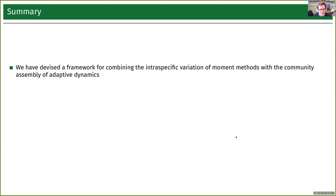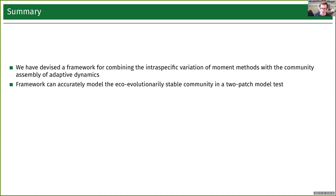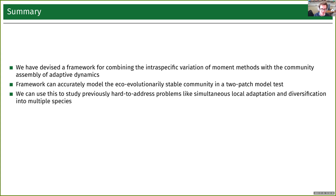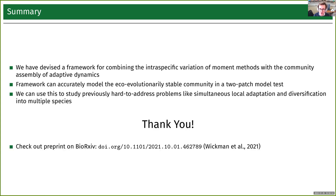In summary, we have devised a framework where we can combine the intraspecific variation of moment methods with the community assembly methods of adaptive dynamics. At least for this two-patch model and other tests we've run, it seems to work very well in replicating the trait-space equations. Using this approach, we can address problems previously hard to address with modeling, such as simultaneous local adaptation and diversification into multiple species. For those interested, we have a preprint available. Thank you very much.